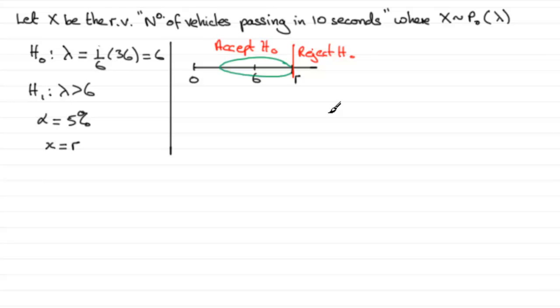So, how do we work out R then? Well, I'm going to write down here that we're going to reject H0 if the probability that X is greater than or equal to that critical value, R, given the null hypothesis is true, in other words, that the mean lambda is 6, turns out to be less than 5%, 0.05.